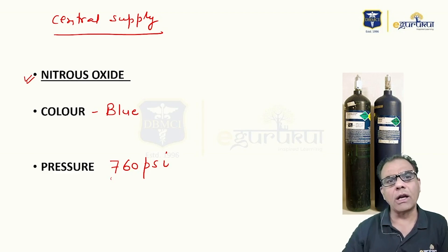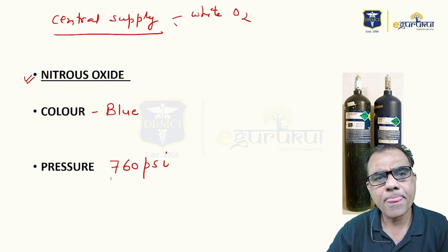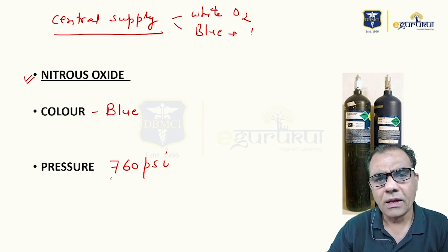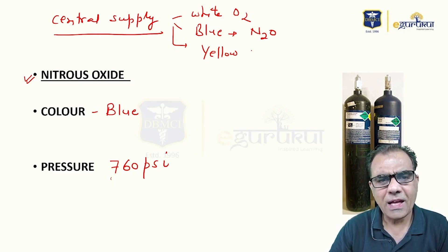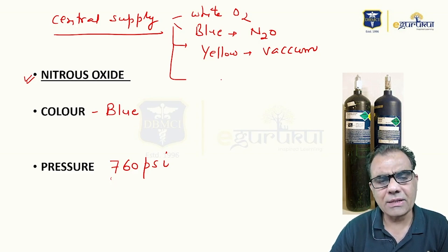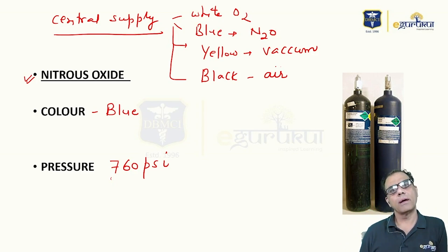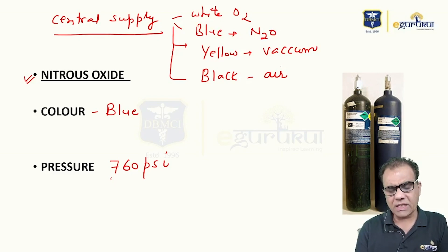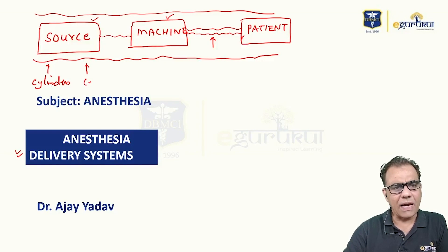Through central supply there is also color coding. You will see a white color pipe for oxygen, a blue color pipe for nitrous oxide, yellow for vacuum or central suction, and black for air. Sources of gases can be cylinders or central supply.